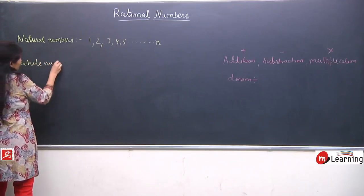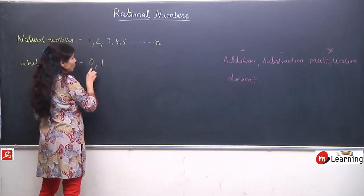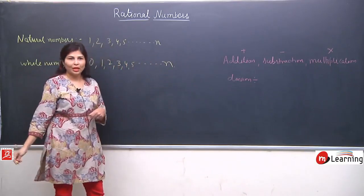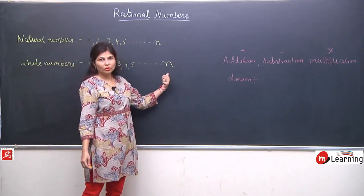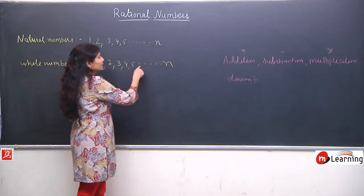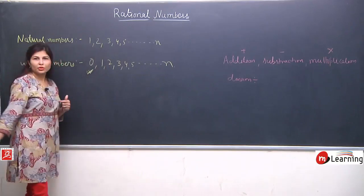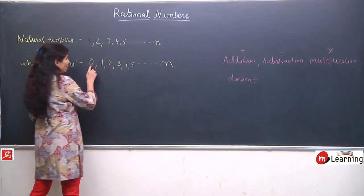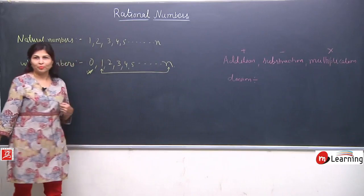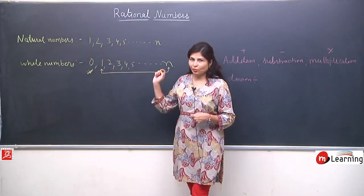Then whole numbers. Whole numbers are those numbers which start from 0, 1, 2, 3, 4, 5 and so on — they are uncountable. But in whole numbers, one additional thing is introduced: that is 0. So whole numbers are 0, 1, 2, 3 and so on. Natural numbers are already included under whole numbers — whole numbers are natural numbers plus the number 0.